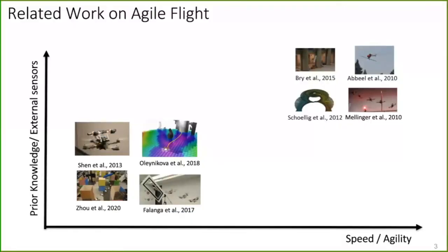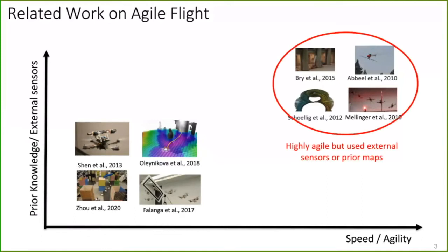If we cluster related work on agile flight on the axis of speed and the prior assumptions they make, we'll see that prior work clusters in two main groups. The first one can go very fast, maybe even achieve or get closer to human performance. On the other hand, it makes strong assumptions about the environment. For example, it requires high quality maps and exact localization, which limits their application where this assumption cannot be made.